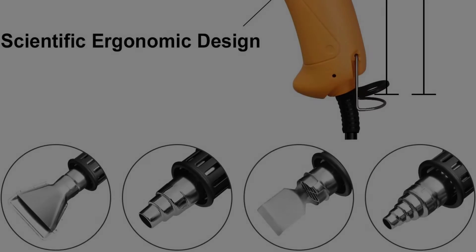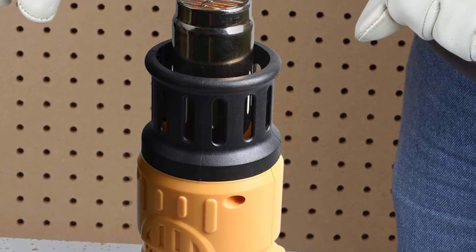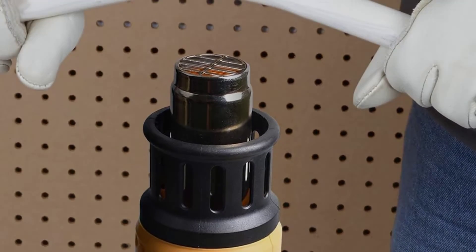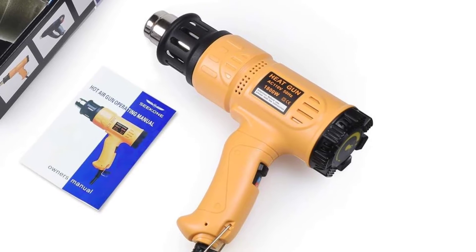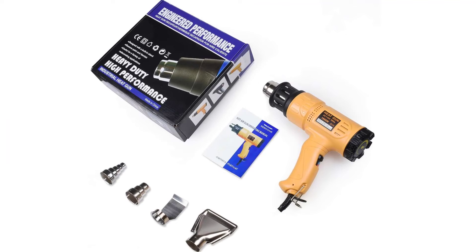For nozzles accessories, deflector nozzle directs a long, narrow heat pattern to the work surface. Two concentrator nozzles direct a concentrated heat flow to the work surface. Reflector nozzle disperses heat flow evenly around the whole work surface.